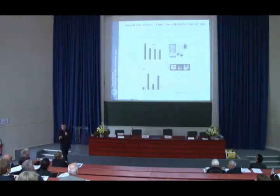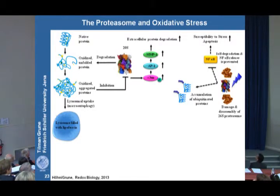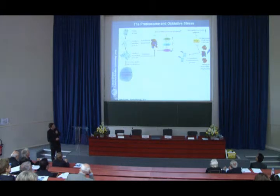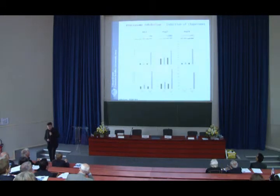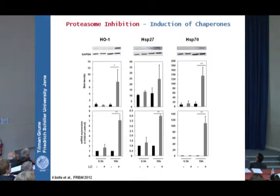One consequence of this process is the accumulation of ubiquitinated proteins. We used a model of stress-induced or proteasome inhibition by an inhibitor and tested on a microarray which genes are induced. Three genes came up as the most induced: HSP27, HSP70, and HO1 — typical stress responses.